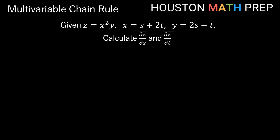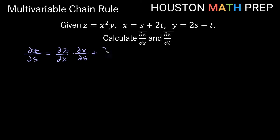For our final example, z is a function of x and y, and x and y are both functions of s and t. We'll calculate both ∂z/∂s and ∂z/∂t. Starting with ∂z/∂s: the formula is the partial derivative of z with respect to x times ∂x/∂s, plus the partial derivative of z with respect to y times ∂y/∂s.